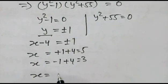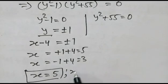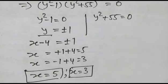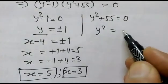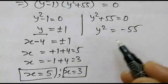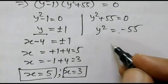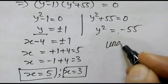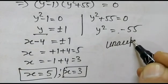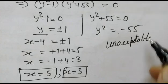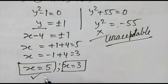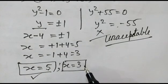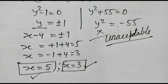So we have x equals 5 and x equals 3. For the second case, y² equals minus 55, which is unacceptable since it gives imaginary values. So the final answer is x equals 5 and x equals 3. Thank you friends.